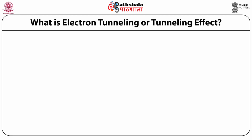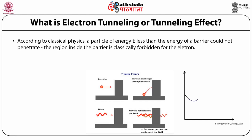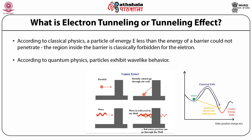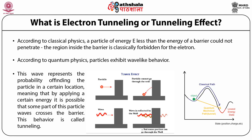What is electron tunneling or the tunneling effect? According to classical physics, a particle of energy less than the energy of a barrier could not penetrate it — the region inside the barrier is classically forbidden for the electron. According to quantum physics, particles exhibit wave-like behavior. This wave represents the probability of finding the particle in a certain location, meaning that by applying a certain energy, it is possible that some part of the particle wave crosses the barrier. This behavior is called tunneling.